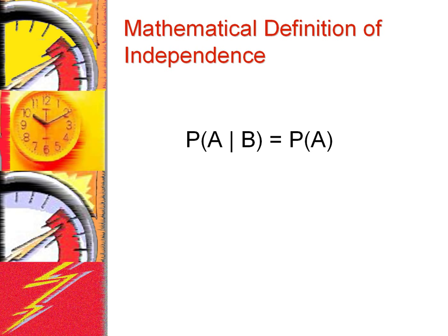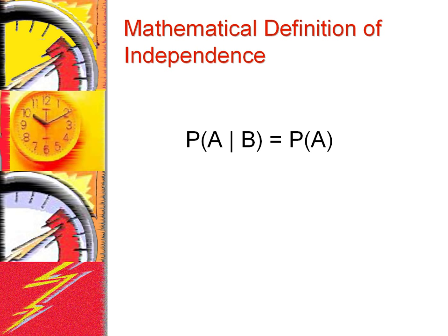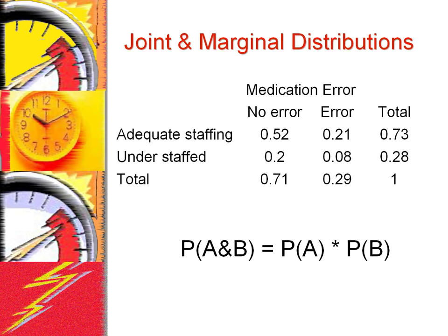In probabilities, the concept of independence has a very specific meaning. If two events are independent of each other, then the occurrence of one event does not tell us much about the occurrence of the other. Mathematically, this condition can be presented as shown. Independence means that the presence of one clue does not change the value of another clue. An example might be the prevalence of diabetes and car accidents — knowing the probability of car accidents in a population will not tell us about the probability of diabetes. When two events are independent, the joint distribution is a product of the marginal distributions.